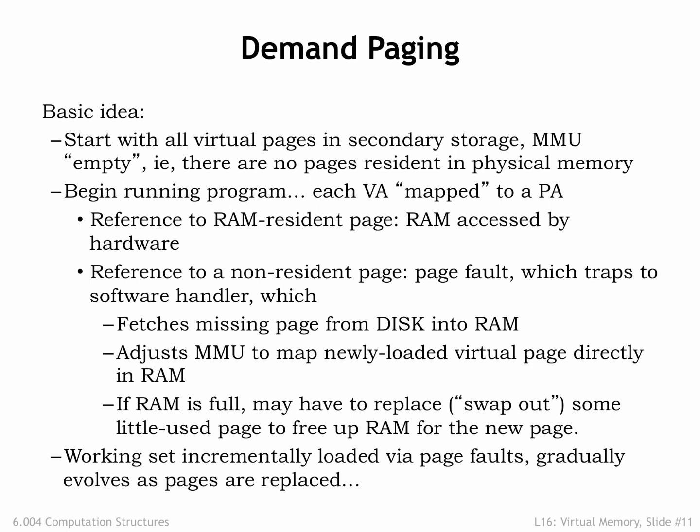After a flurry of page faults when the program starts running, the working set changes slowly so the frequency of page faults drops dramatically, perhaps close to zero if the program is small and well-behaved. It is possible to write programs that consistently generate page faults, a phenomenon called thrashing. Given the long access times of secondary storage, a program that's thrashing runs very slowly, usually so slowly that users give up and rewrite the program to behave more sensibly.